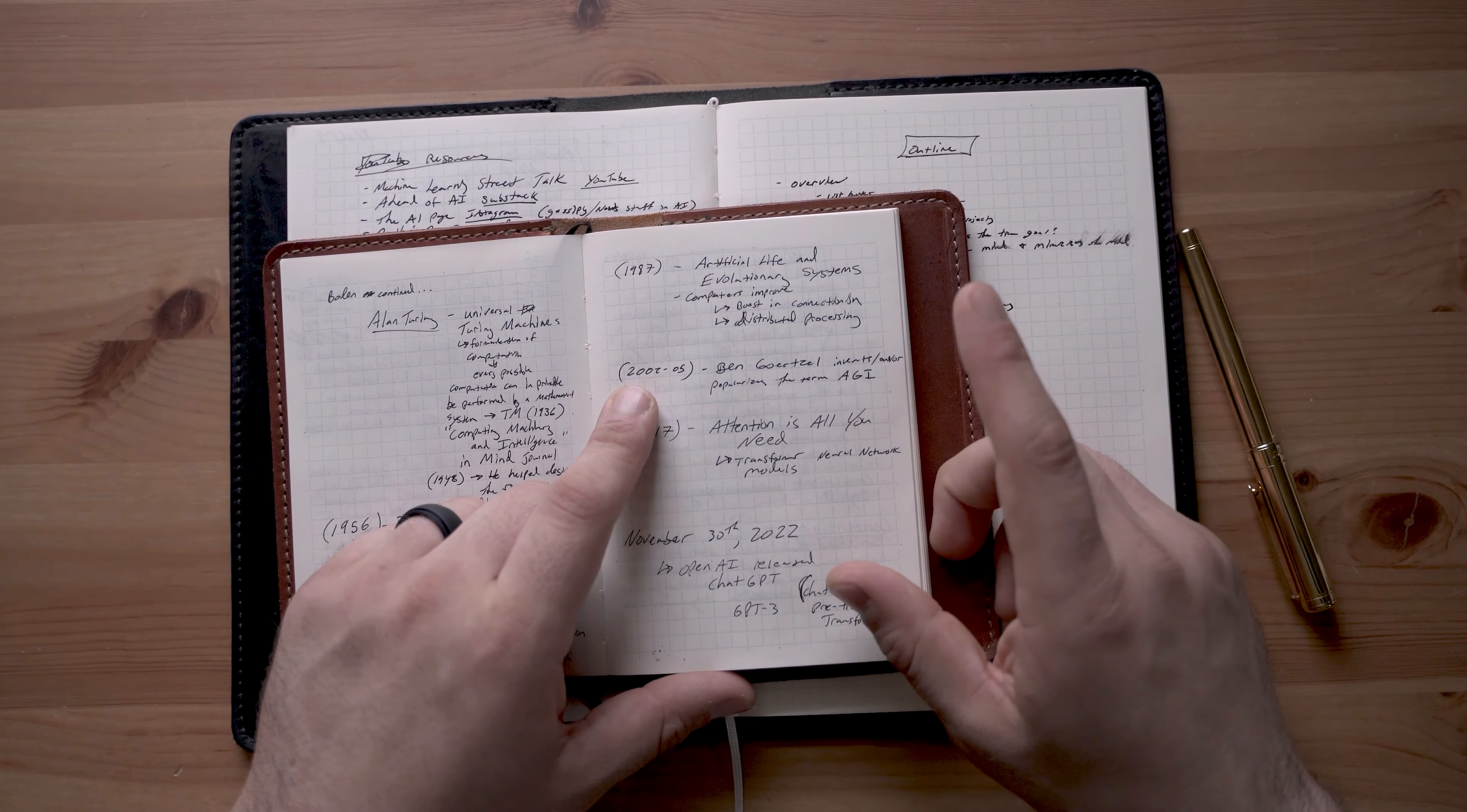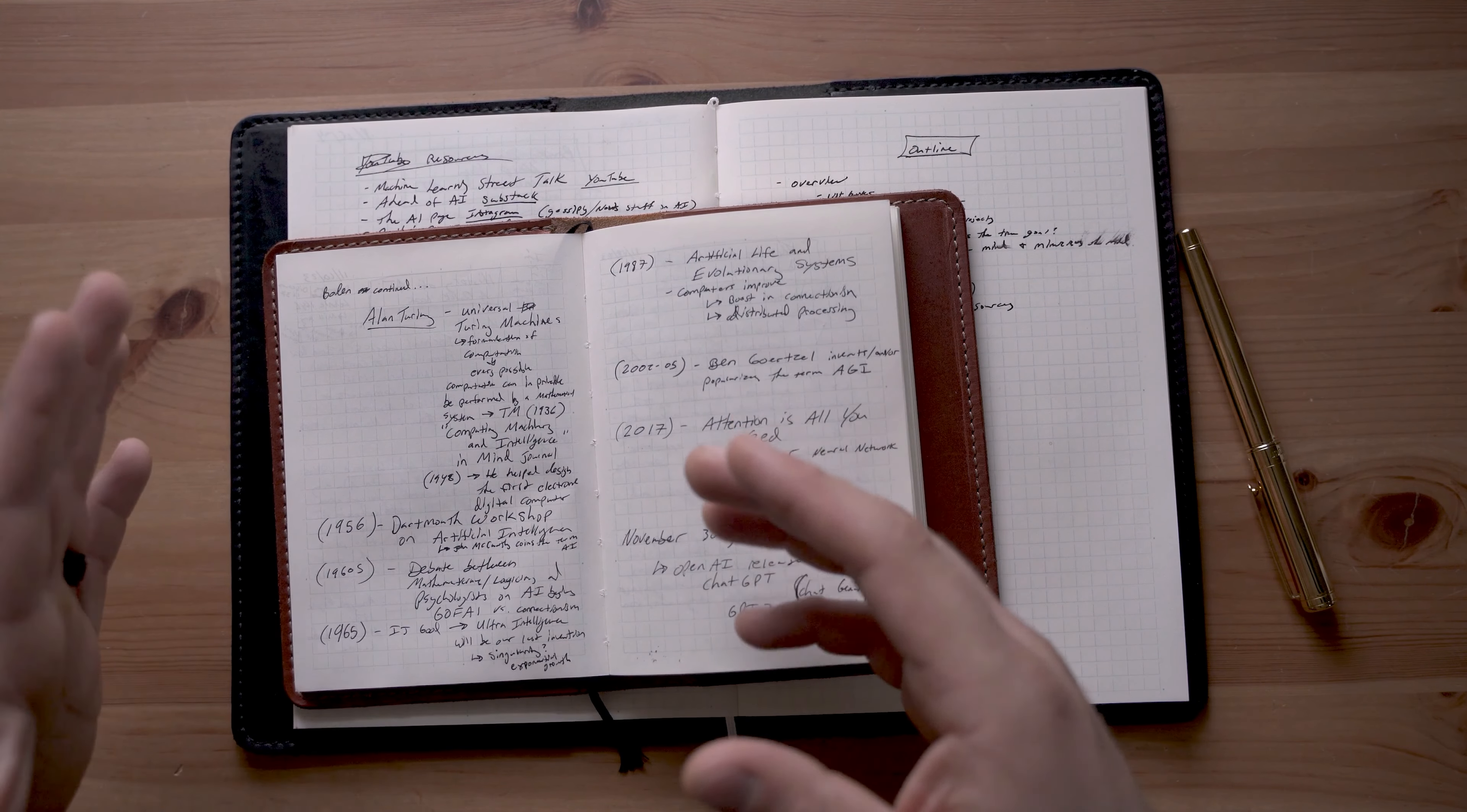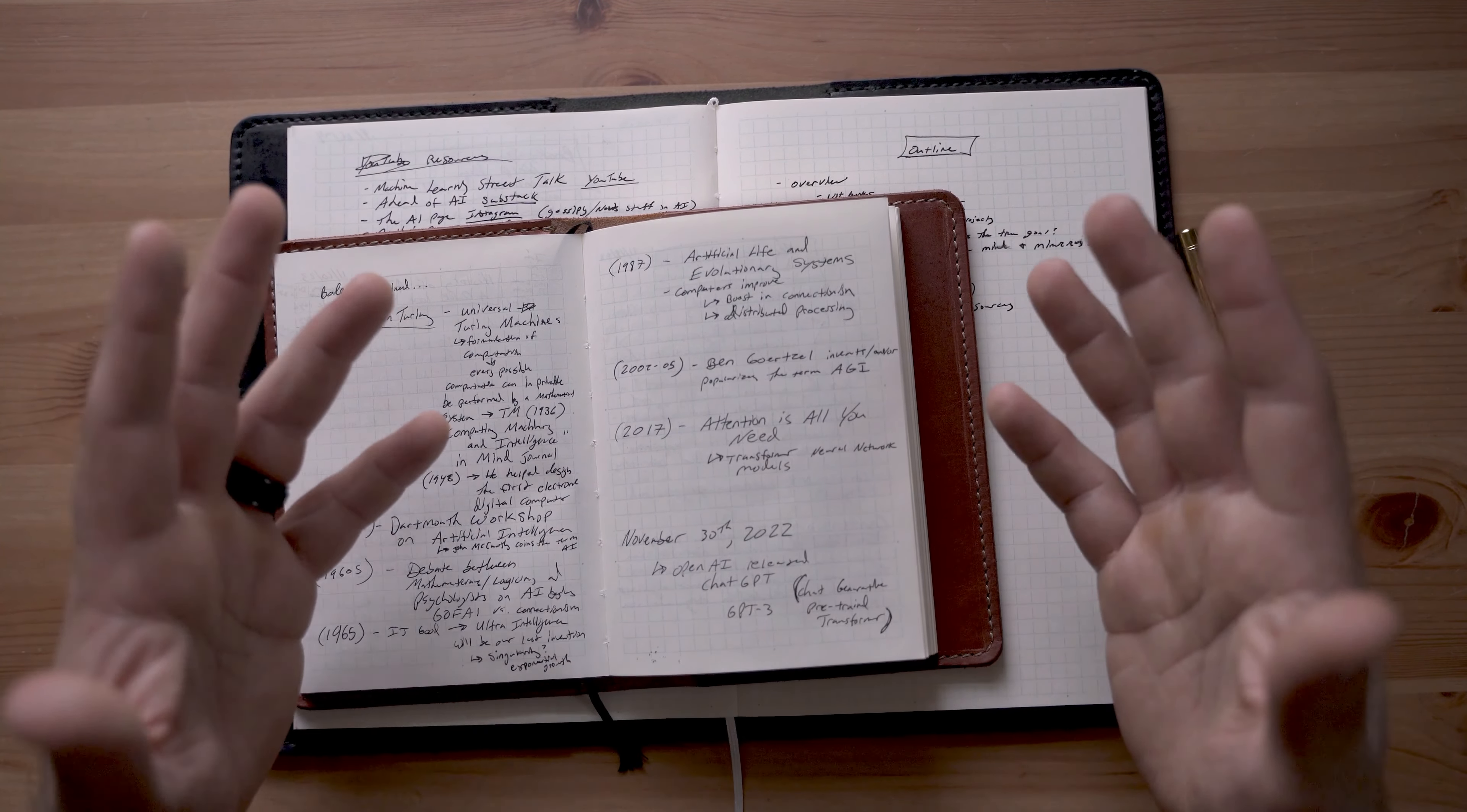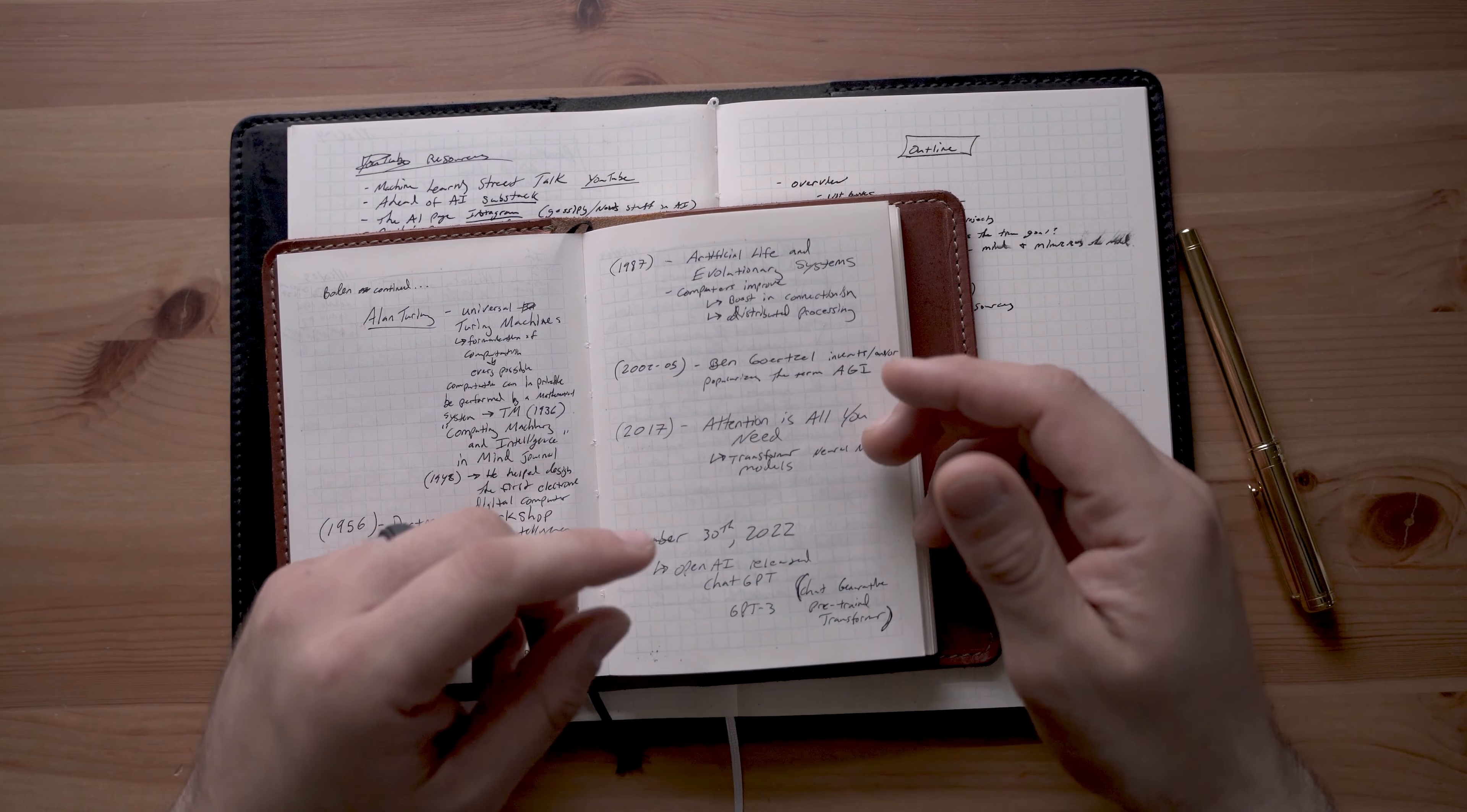2002, Ben Gertzel popularizes the term AGI, artificial general intelligence, which helps demarcate that project from other types of AI which are narrowly focused on one particular task. Artificial general intelligence is what we see in science fiction all the time. This is something that can generalize in the same way that humans can, instead of just playing Go or just playing chess or just solving CAPTCHAs or something like that.